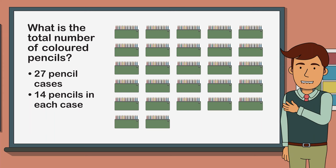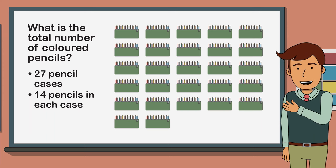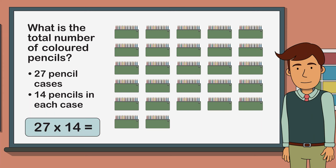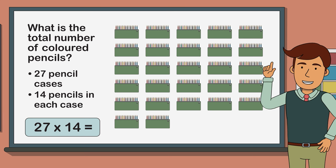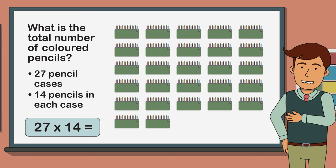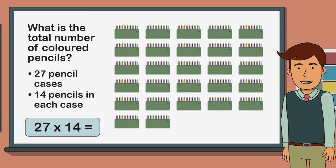I know that 27 equal groups of 14 is 27 times 14 but that's quite a big multiplication problem. Never fear, today I'm going to show you one of my favorite mathematical strategies called the area model which is perfect for solving multiplication problems involving larger numbers.